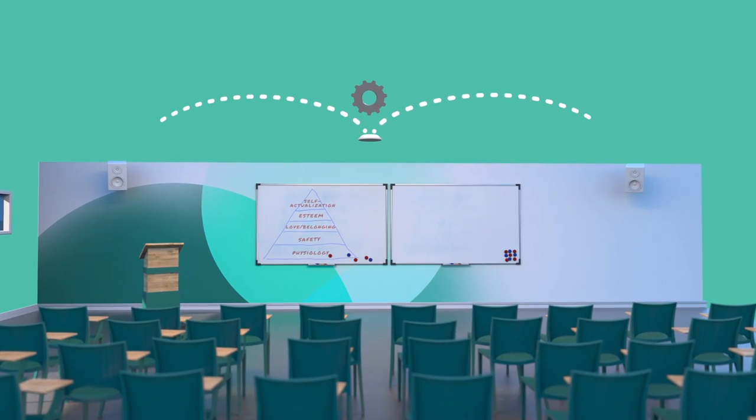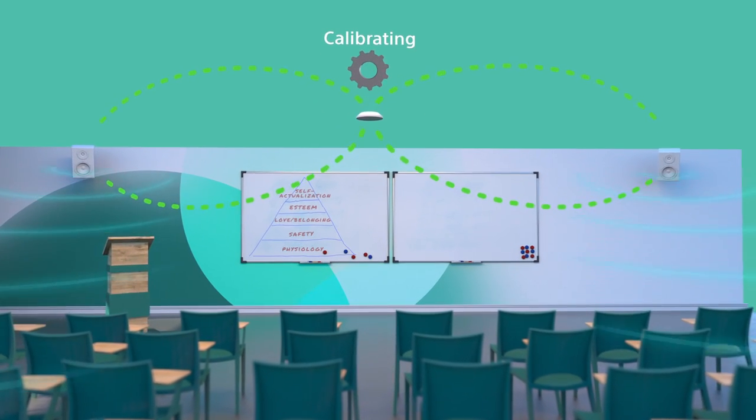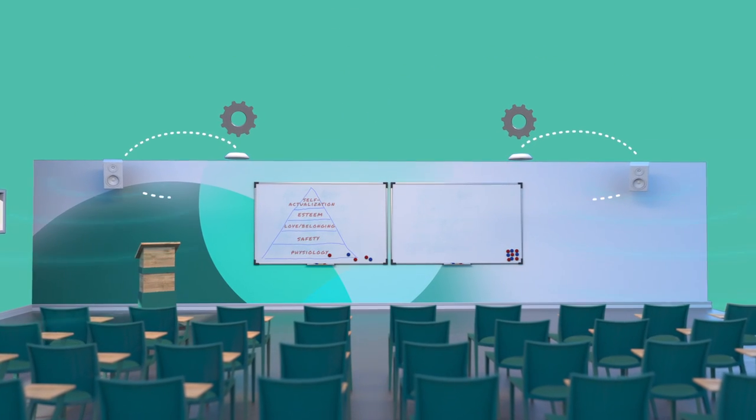During installation, the Beamforming Microphone sends out a test signal, which is then self-detected, to configure the speech reinforcement to the room, and works with multiple microphones in one room.